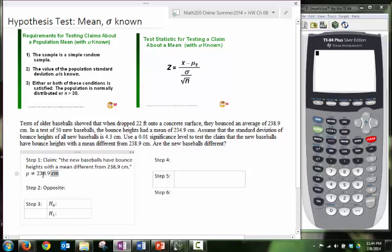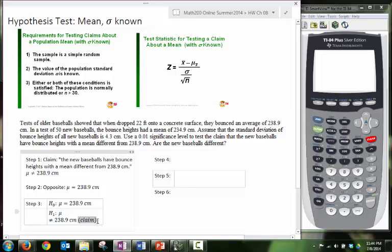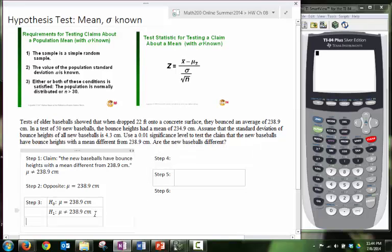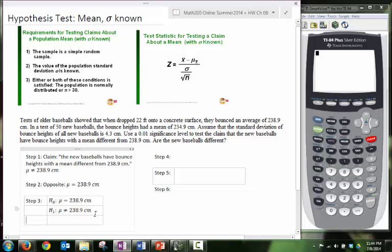Now the opposite of this claim will essentially be the same thing, except we will have an equal sign. Between the null and alternative hypothesis, the one with the equal sign has a condition of equality and should be the null hypothesis. And the other one is going to be the alternative. And just for good measure, we should actually label it as a claim.